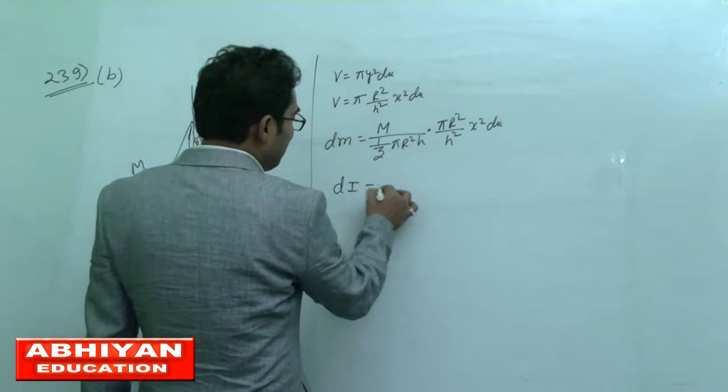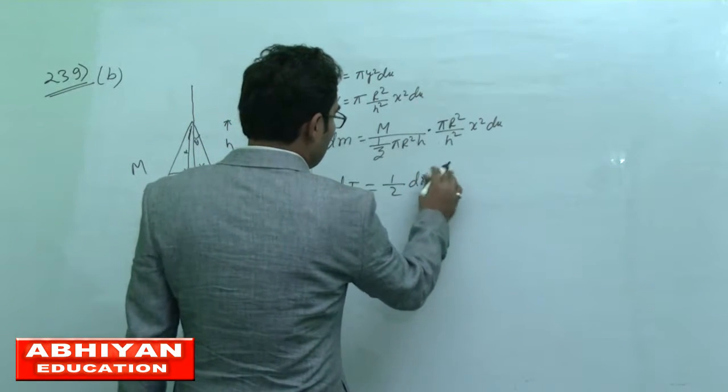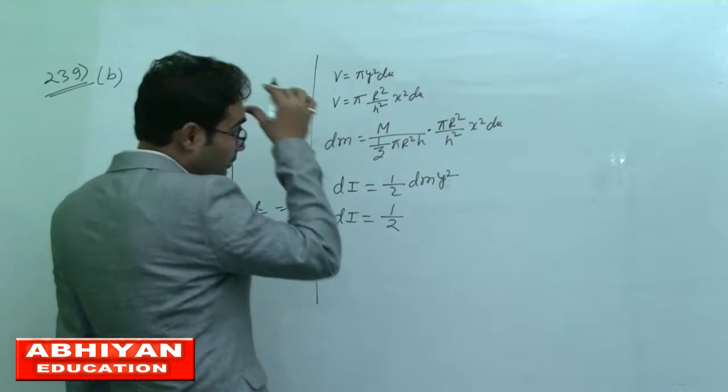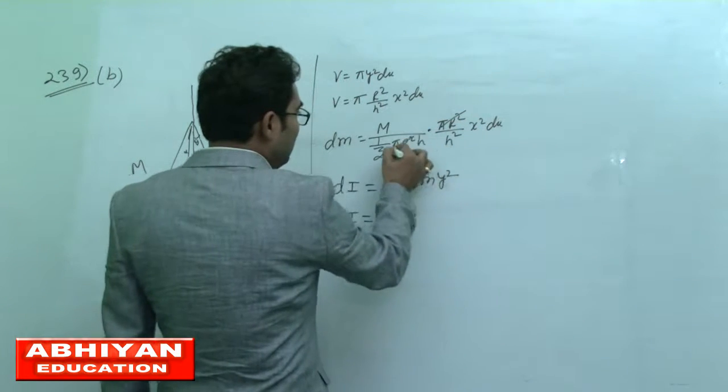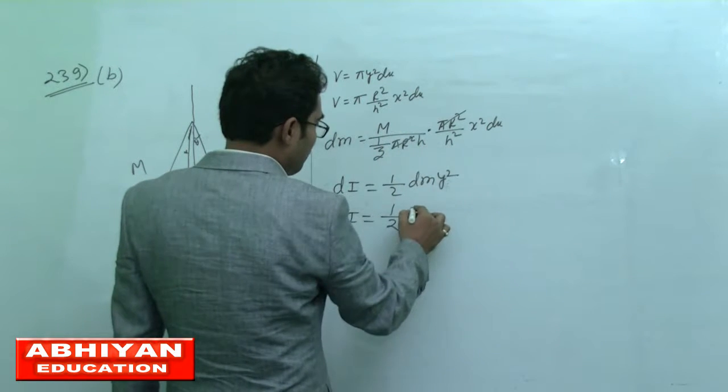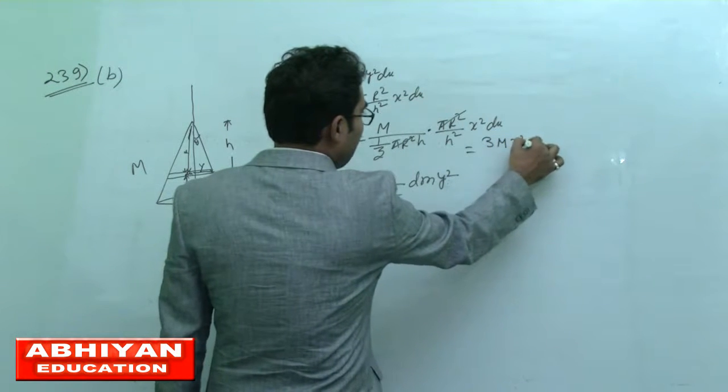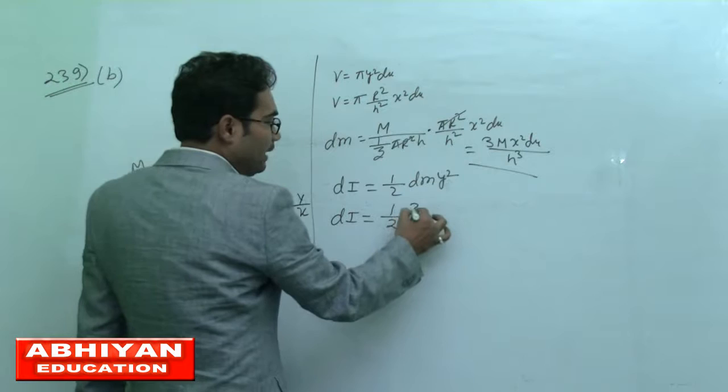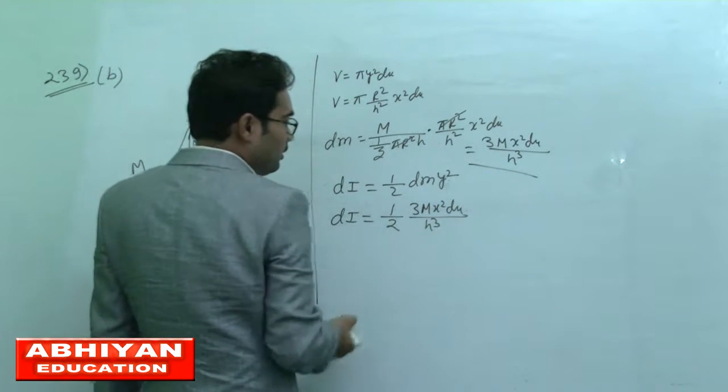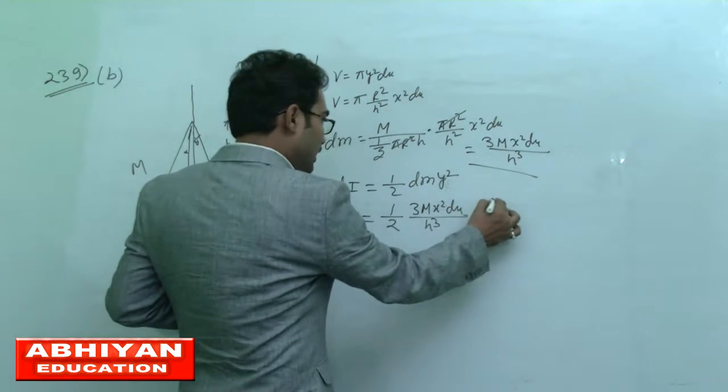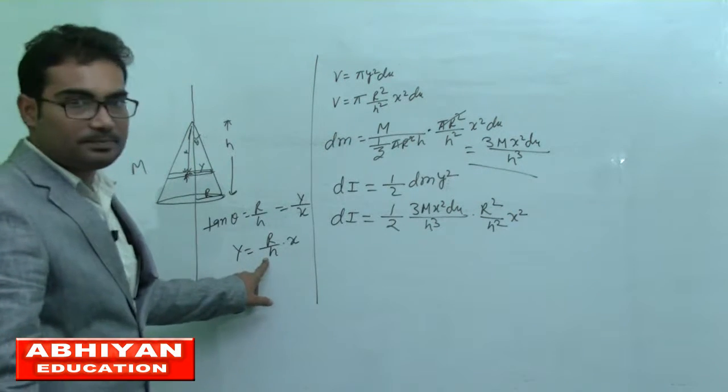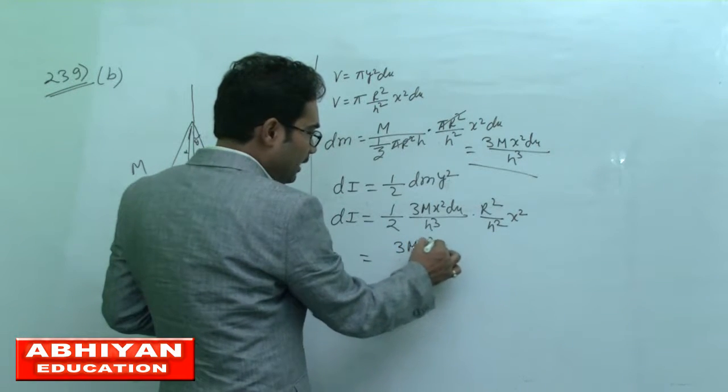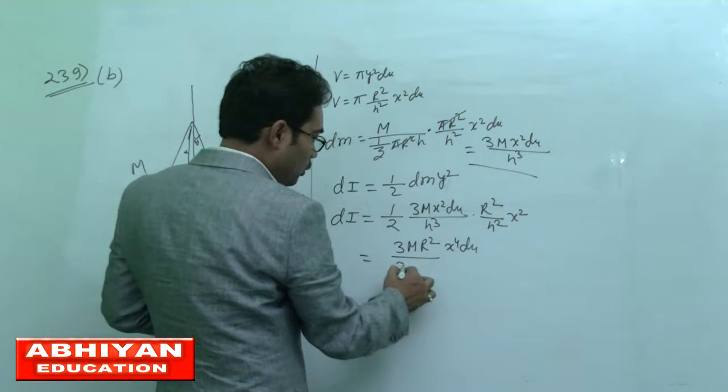Moment of inertia dI equals 1 by 2 dm y square. So dI equals 1 by 2 dm, where dm equals 3M x square dx by h cube, times y square. Y square equals R square by H square times x square. If you solve this equation, then 3M R square x to the power 4 dx by 2 h to the power 5.